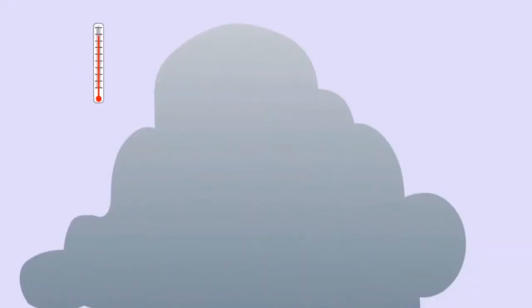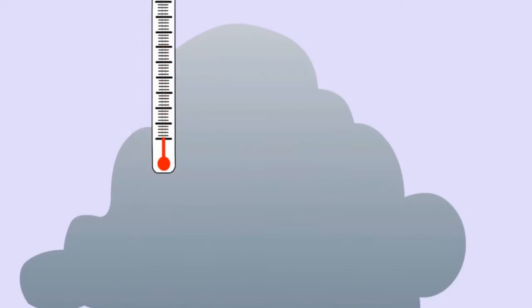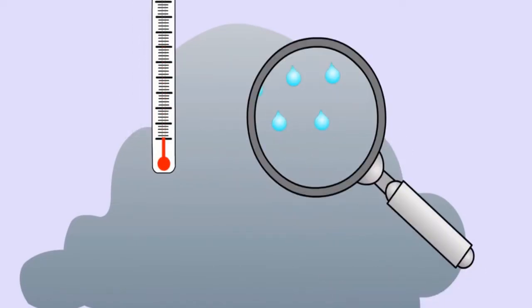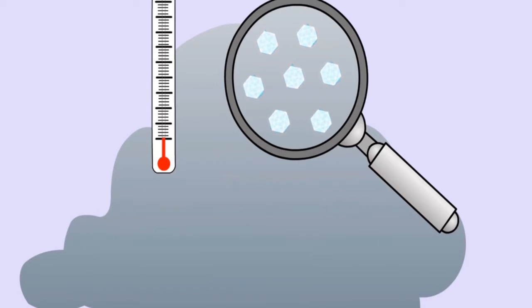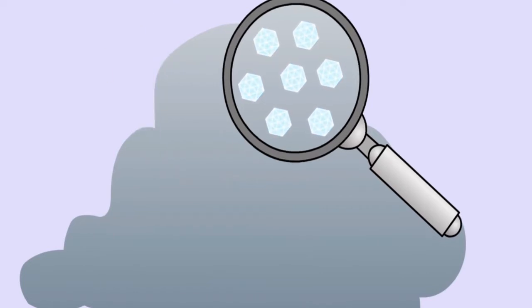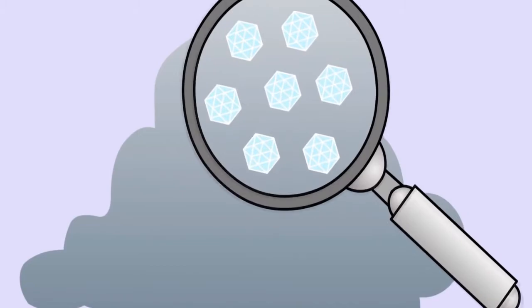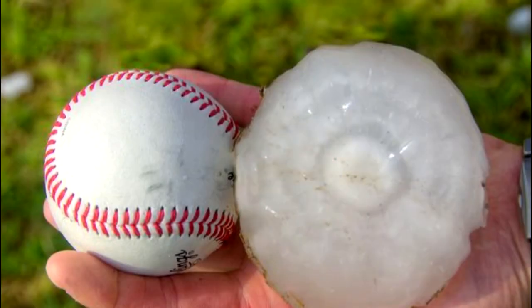Hail is another condition during thunderstorms that can cause damage. Supercooled drops above the freezing level begin to freeze. Once a drop has frozen, other drops latch on and freeze to it, so the hailstone grows, sometimes into huge ice balls.